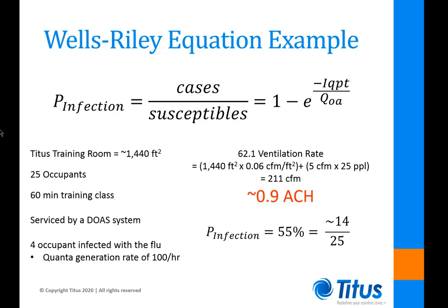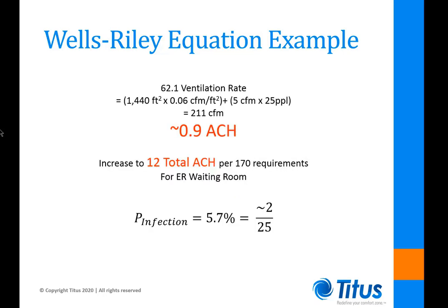In comparison, we can increase the air change rate to 12 air changes per hour — like what you'd see in an ER waiting room — with 100% exhaust. If we increase to 12 total air changes, the infection rate drops very significantly to less than 6%.